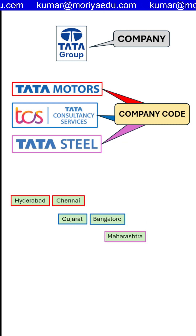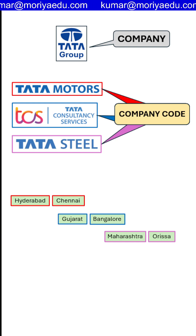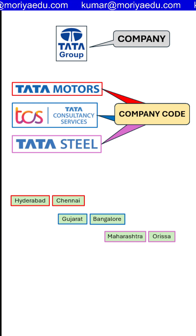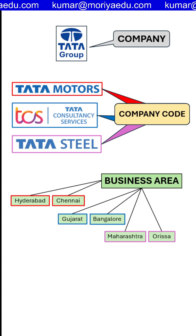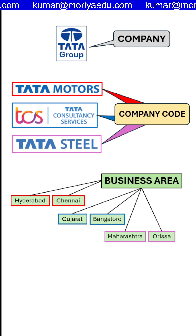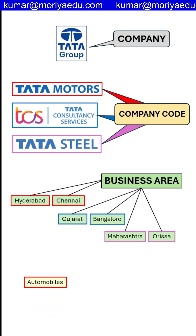Similarly, Tata Steel has its branches in Maharashtra and Orissa. All these branches for different company codes are called business areas. Tata Motors is in the automobile industry and TCS is in services.